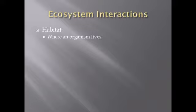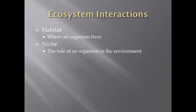Ecosystem interactions introduces two key words: habitat and niche. Habitat is simply where an organism lives — a teacher's habitat is his home, your habitat is your house, the habitat of the cats in Riyadh is essentially Riyadh. Niche is more complex — it refers to the role of an organism in the environment, and the first part of that is how an organism finds food.